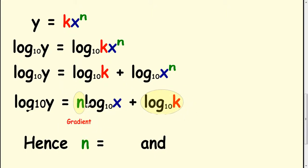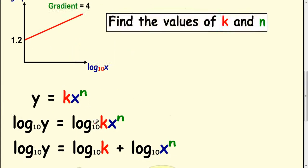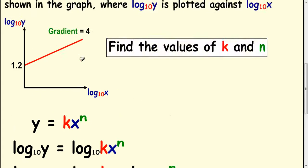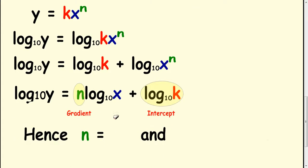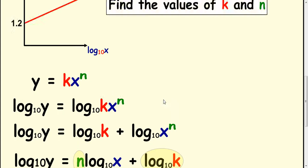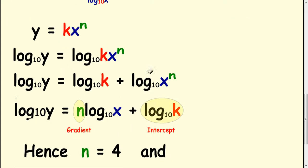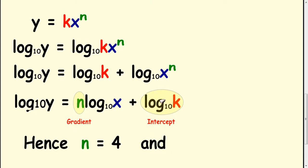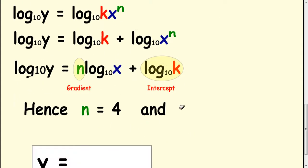So n is your gradient and log k is your intercept. Looking at the graph, the gradient is 4 and the intercept is 1.2, so log k to the base 10 is equal to 1.2.